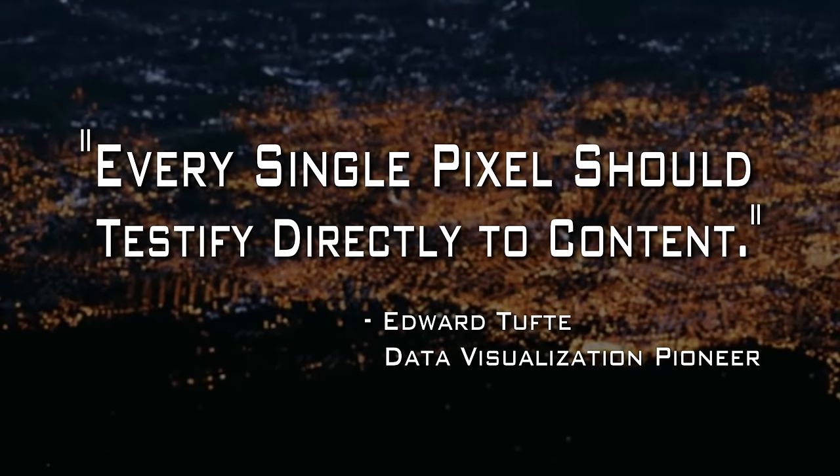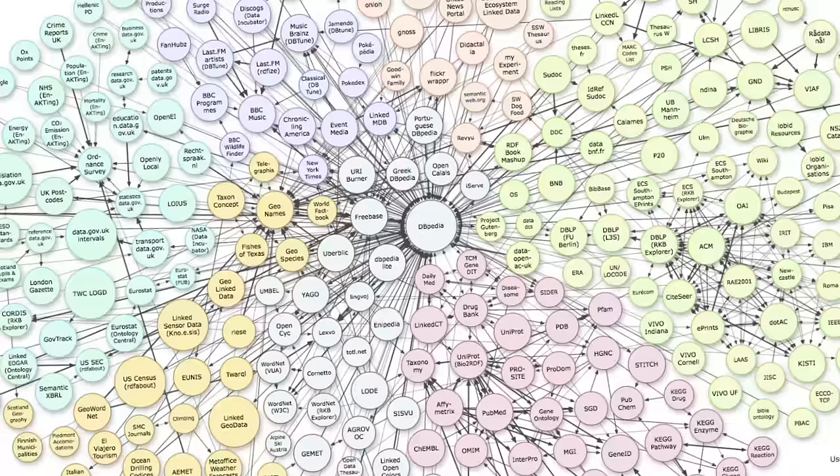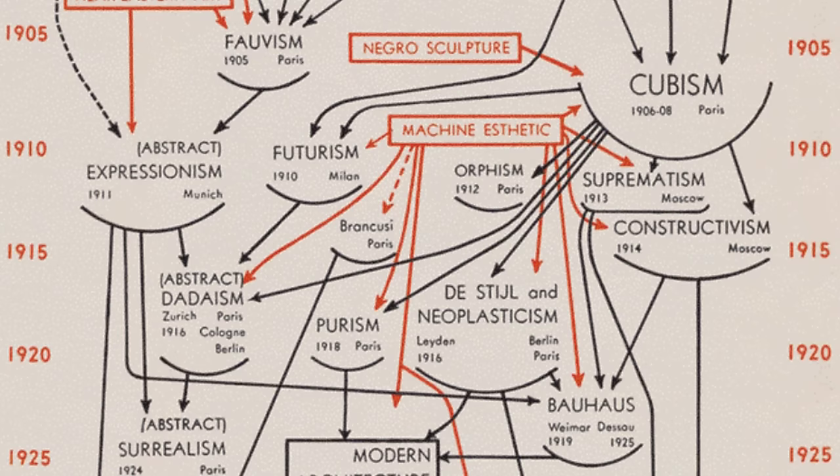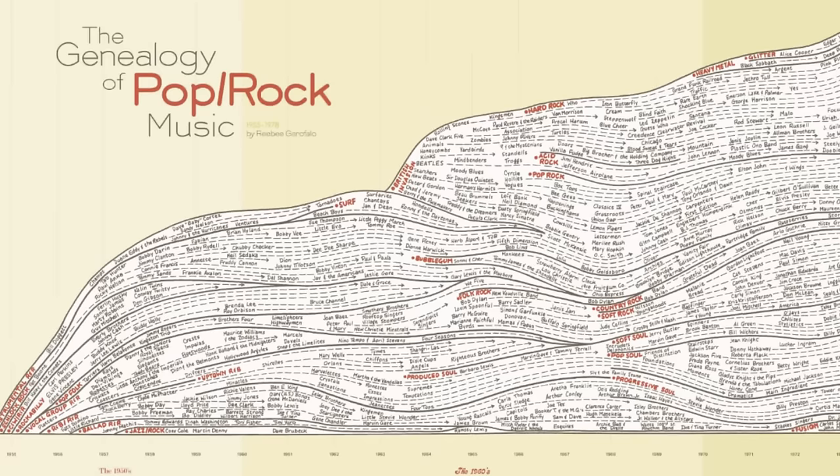In the arrangement of a visualization, every single pixel should testify directly to content. As Jony Ive, the great Apple designer said, we spend most of our time getting design out of the way. It's got to get out of the way because it's about the relationship of the viewer and how they reason about the content.